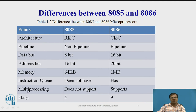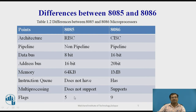Regarding multiprocessing: the 8085 does not support multiprocessing, but the 8086 does support multiprocessing. Regarding flags: the 8085 supports 5 different flags, while the 8086 supports 9 different flags.